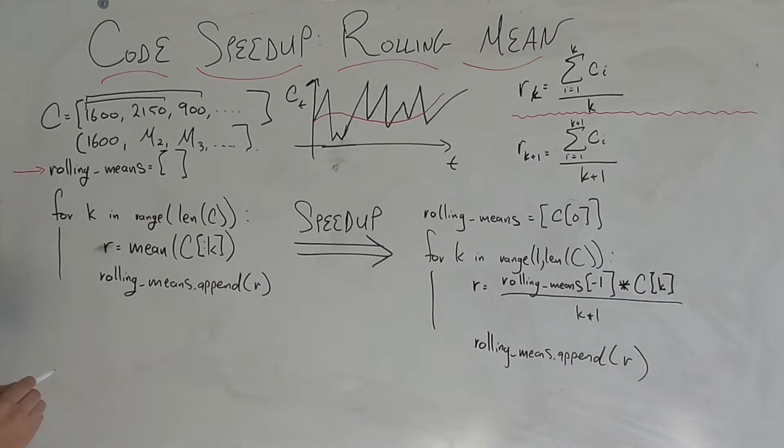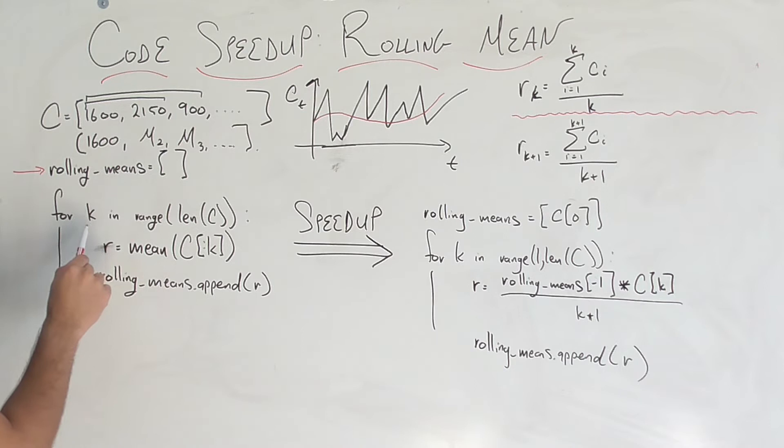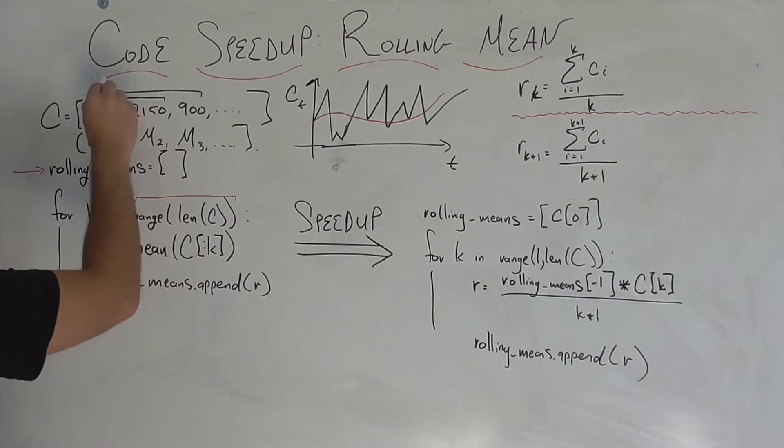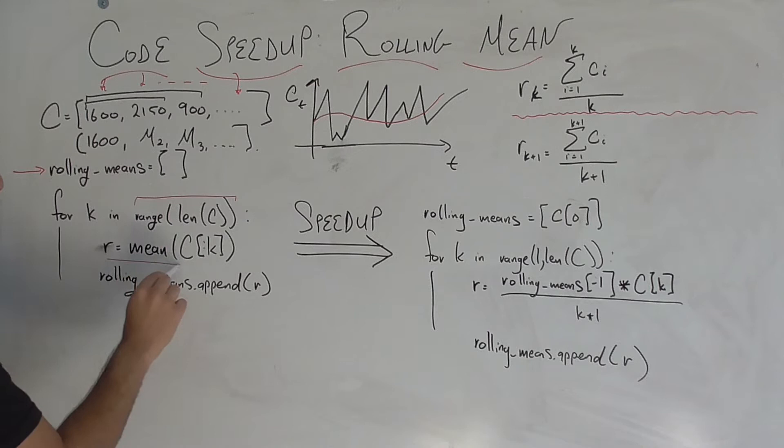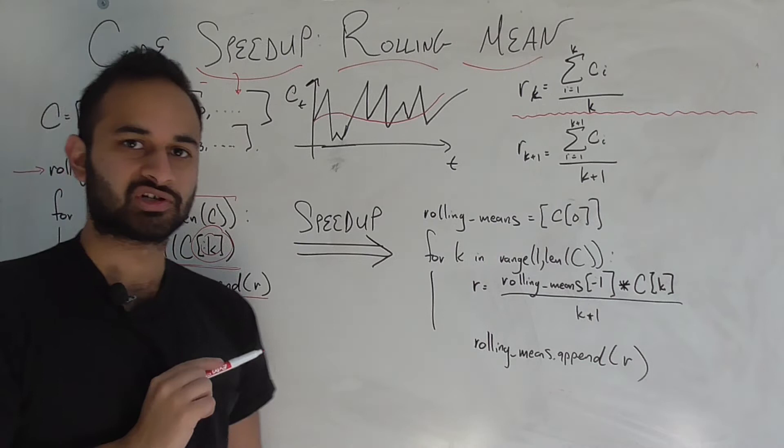For example, we might initialize a rolling means list which is empty, and then of course we'll need to calculate this rolling mean for every day from k equals one to the final day that we have in our data. So we say for k in range len c, those of you unfamiliar with this, this is basically just saying go from first day, second day, all the way to the last thing in my list. Calculate the mean of my list up until that day k. So this notation is just take my list and stop at day k and calculate the mean up until then. Then just add that mean to my rolling means, and this will actually work. There's no problems here, it'll work out just like you would expect it to.